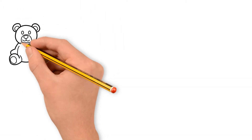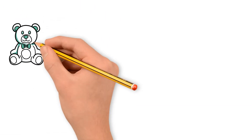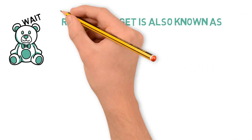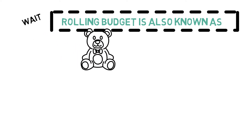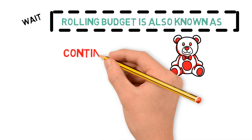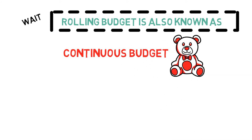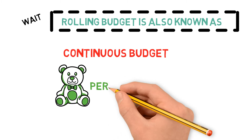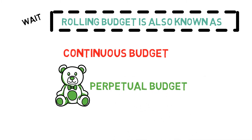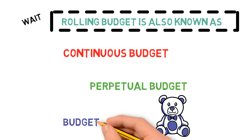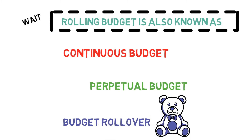Now let's talk about rolling budget. Rolling budget is also known as continuous budget. It is also known as perpetual budget, and we have a third name also — that is budget rollover.